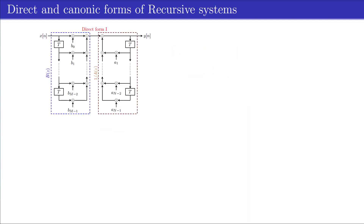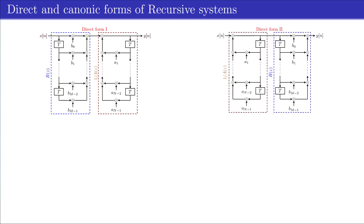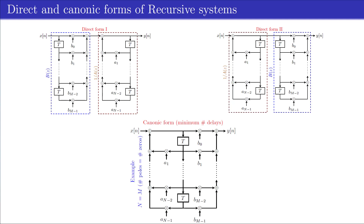The direct form 1 structure is an implementation which follows from the description of the system function H as a product — first the recursive part 1 divided by A, and then the non-recursive part B. From the direct form 2 structure, it is obvious that we can combine delays, which results in a direct form 2 structure that is canonic, since it uses the minimum number of delays for the given system function H.